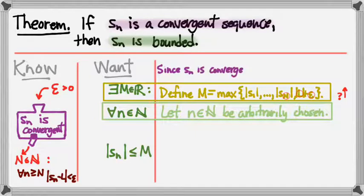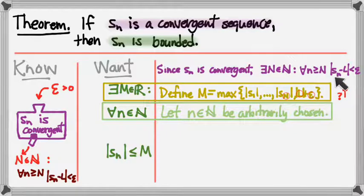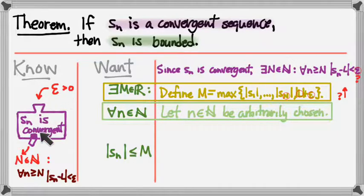The only place N, L, and epsilon can come from is from what we know about the sequence Sn — that it's convergent. So those quantities have to come from an invocation of the convergence definition. We supply the machine with an epsilon, it produces a capital N satisfying that for all n ≥ N, |Sn − L| < epsilon. I can write that statement down, but I still haven't defined for the reader where epsilon comes from.